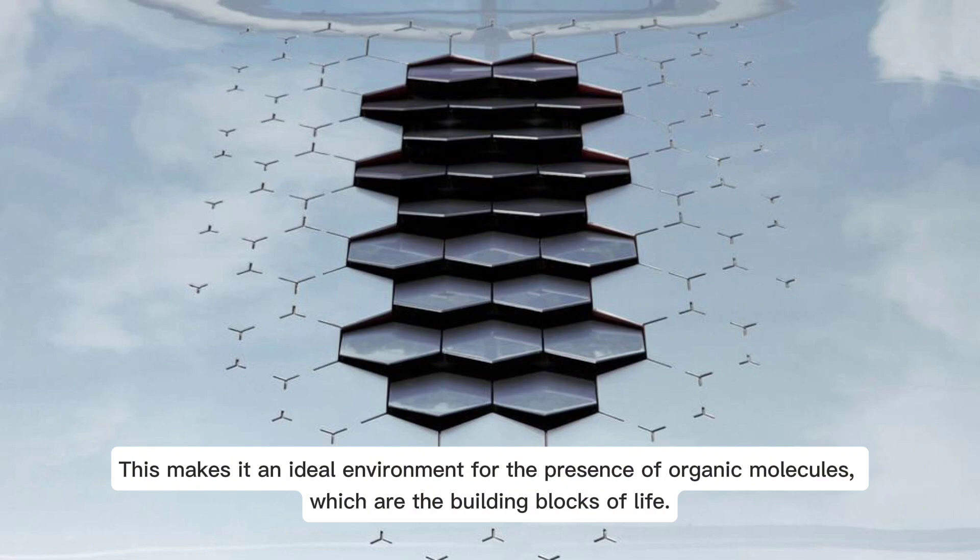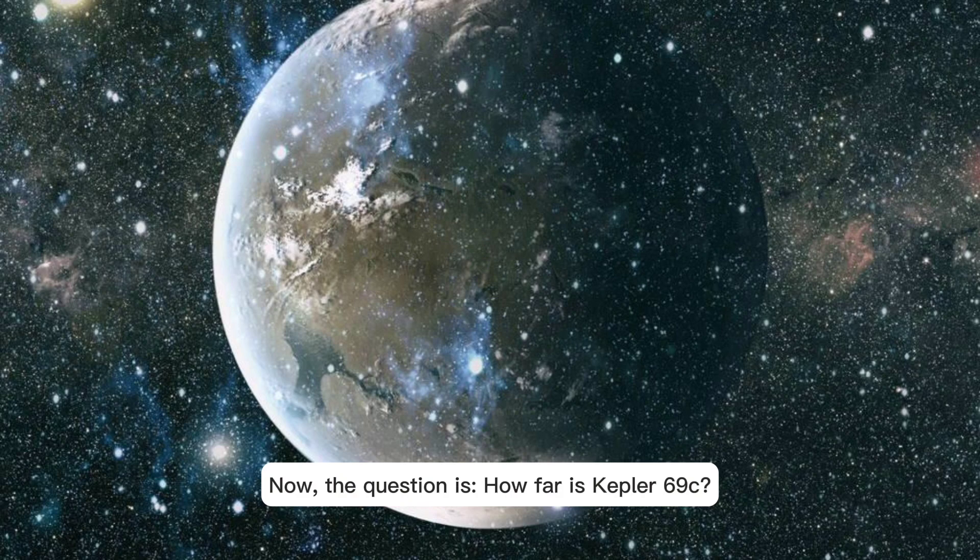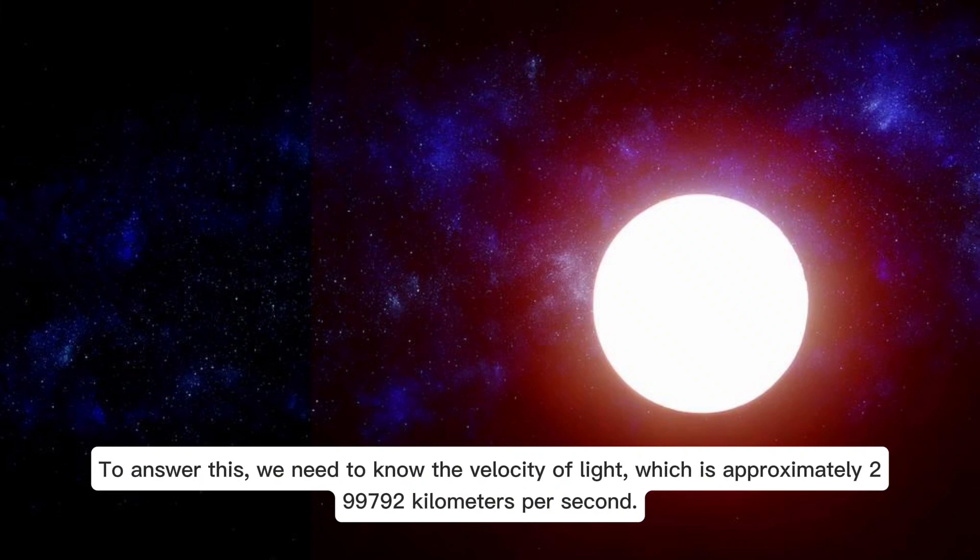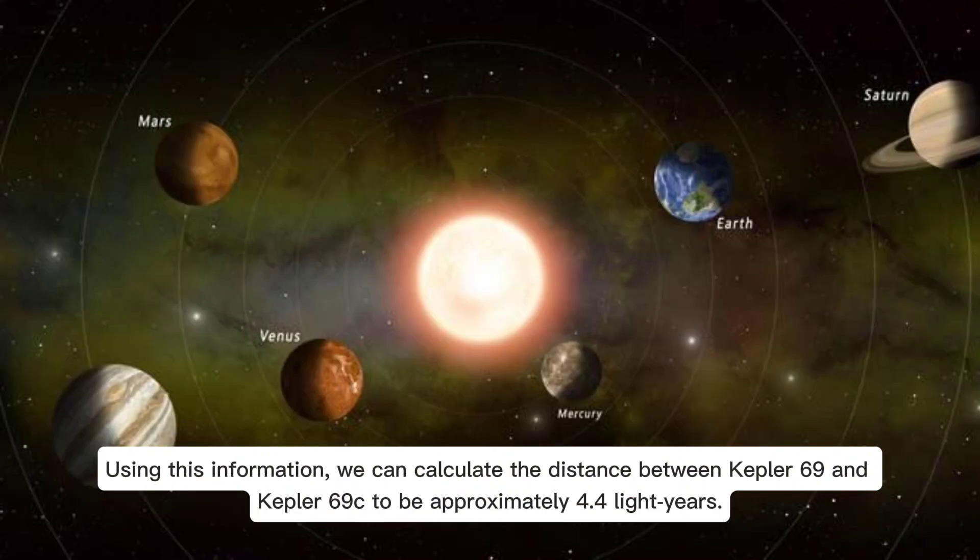Now the question is, how far is Kepler 69c? To answer this, we need to know the velocity of light, which is approximately 299,792 kilometers per second. Using this information, we can calculate the distance between Kepler 69 and Kepler 69c to be approximately 4.4 light years.